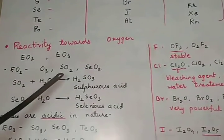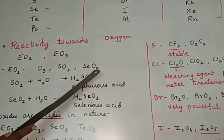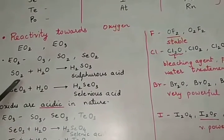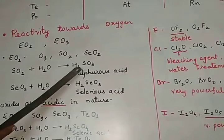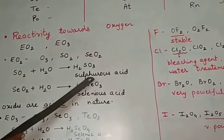If you see the reaction of sulfur dioxide and selenium dioxide, sulfur dioxide combines with water to form H2SO3, a simple reaction. This is called sulfurous acid.